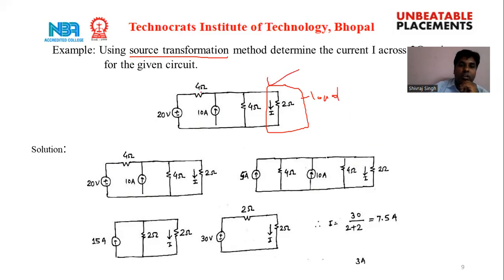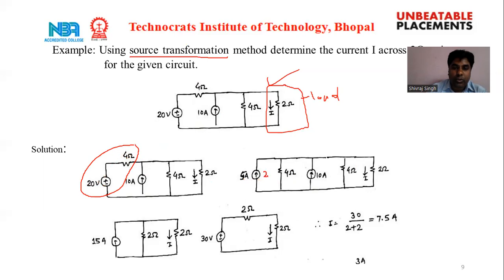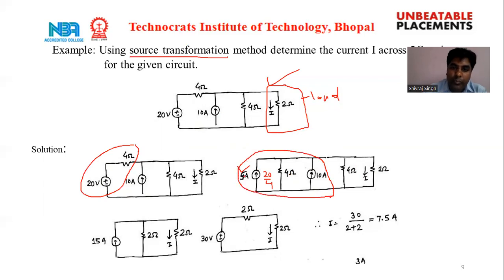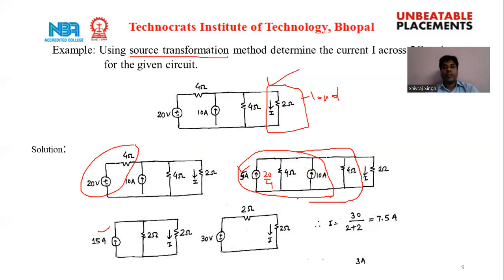The current I equals V divided by R, which is 20 divided by 4, giving 5 ampere, with the 4 ohm resistance in parallel. Now 5 ampere and 10 ampere current sources are connected in parallel, so their currents add: 5 plus 10 equals 15 ampere. The 4 ohm and 4 ohm resistances in parallel give a combined resistance of 2 ohm.